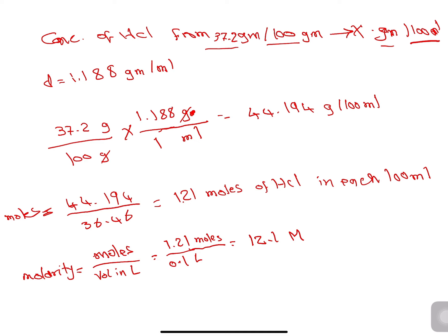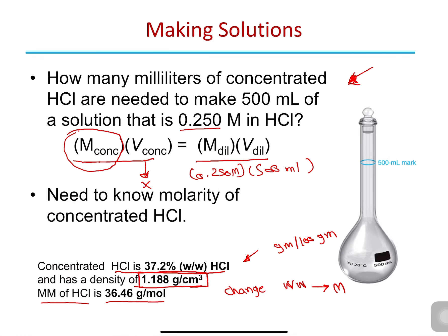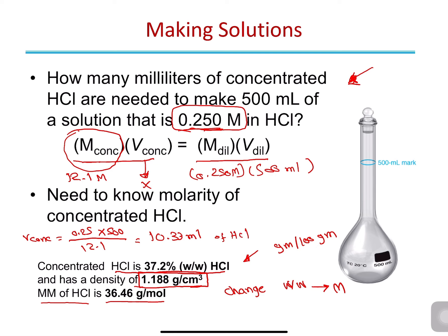Now I can apply the equation: M_concentrated times V_concentrated equals M_diluted times V_diluted. M_concentrated is 12.1 molar, so rearranging, V_concentrated equals 0.25 times 500 divided by 12.1, which gives 10.33 mL. This means that to prepare 500 mL of a 0.25 molar HCl solution, you need to use 10.33 mL of the concentrated HCl. Always remember to use the same term of concentration on both sides of the equation.